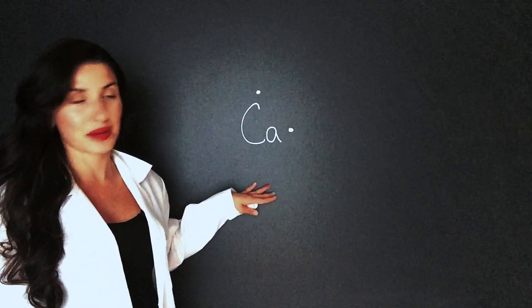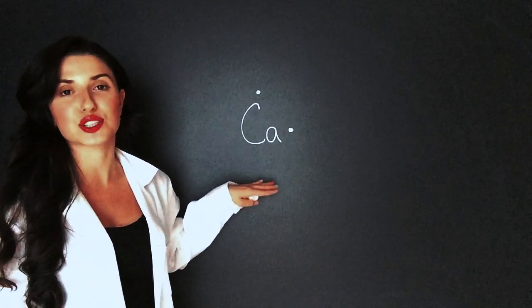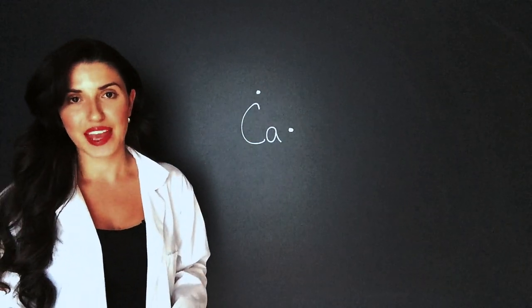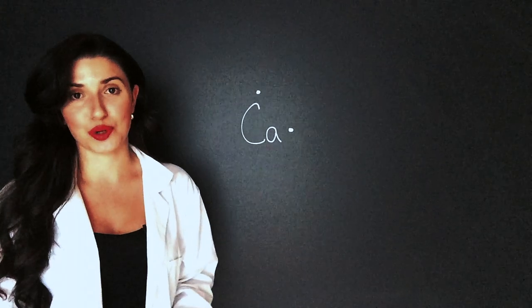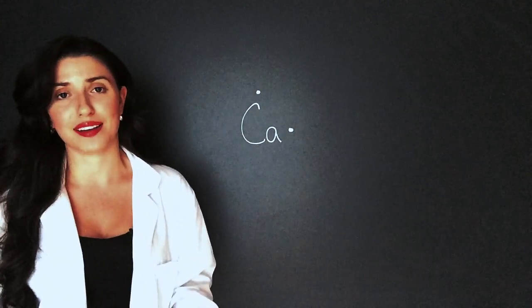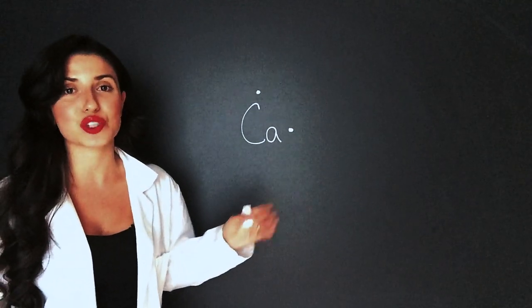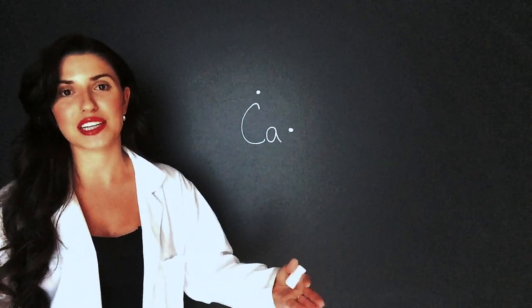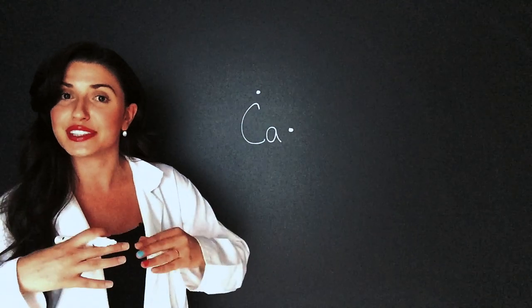The example I want to use for a cation is calcium. Here is the Lewis structure of calcium. It has two electrons in its most outer shell. Now remember our octet rule. An element always wants to have a full outer shell.